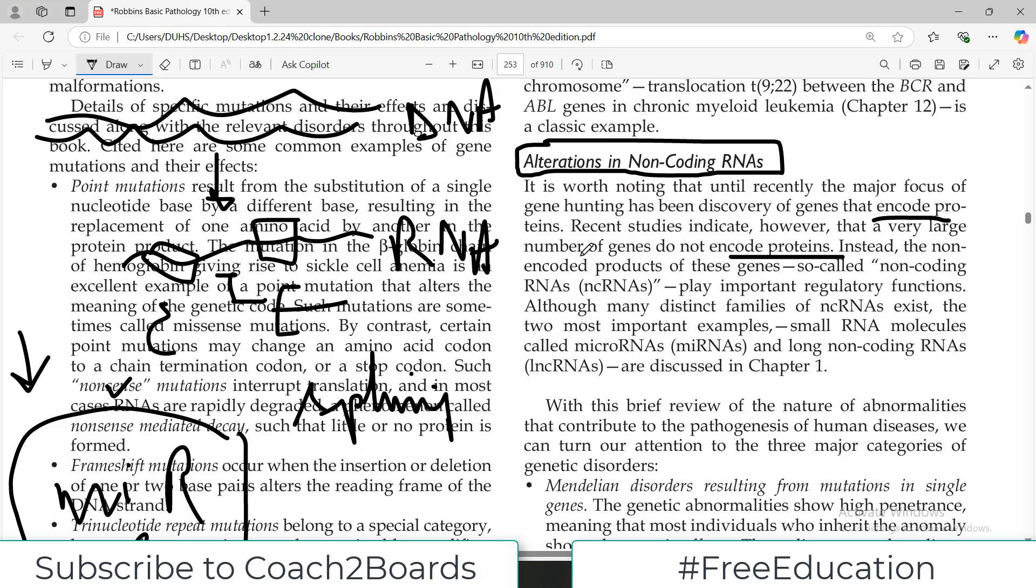Instead, the non-encoded products of the genes which are for example known as non-coding RNAs, they play important regulatory functions. Although many distinct families of non-coding RNAs exist, the two of them are important.